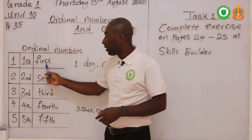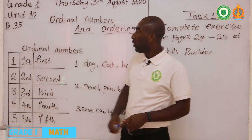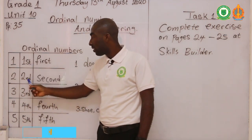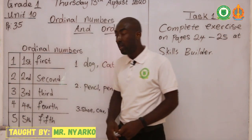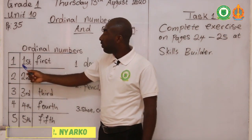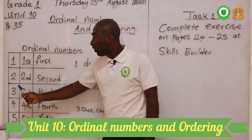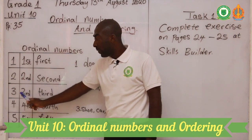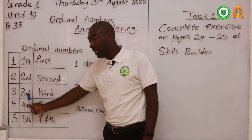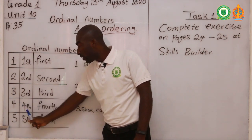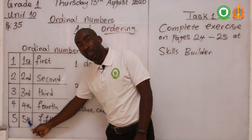These are the first five ordinal numbers. We have first, second, third, fourth, and fifth. If you are number one it means you are the first. If you are number two it means you are the second. If you are number three it means you are the third. If you are number four it means you are the fourth. If you are number five it means you are the fifth person.